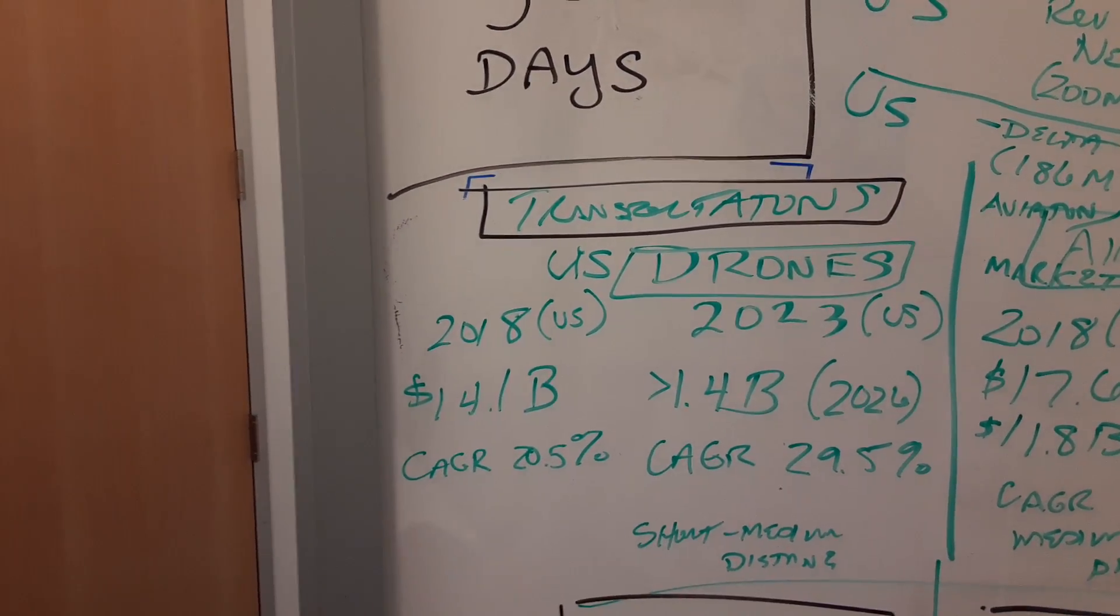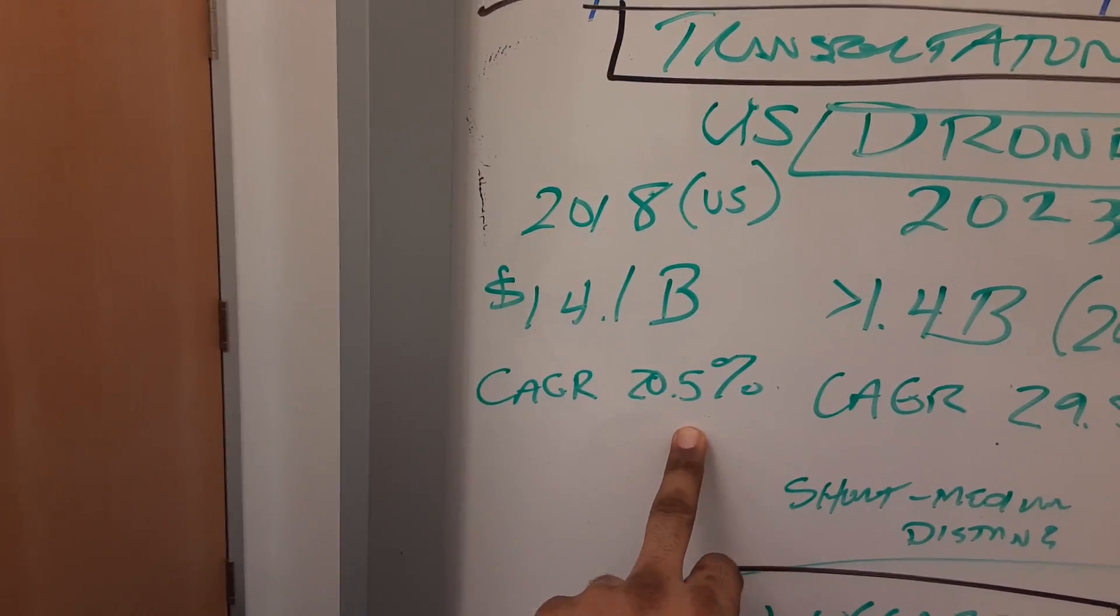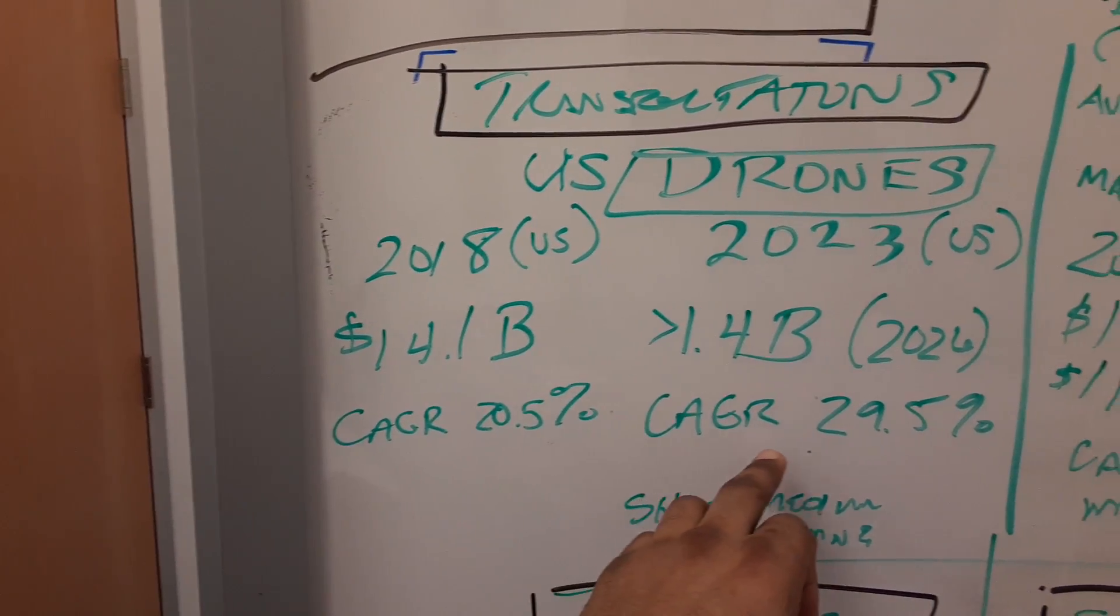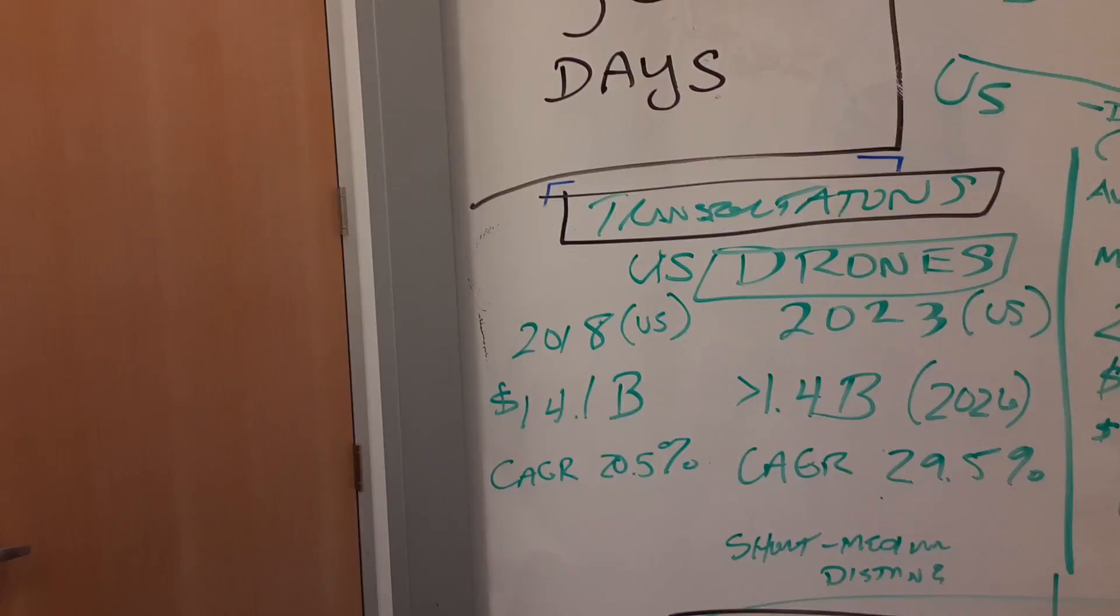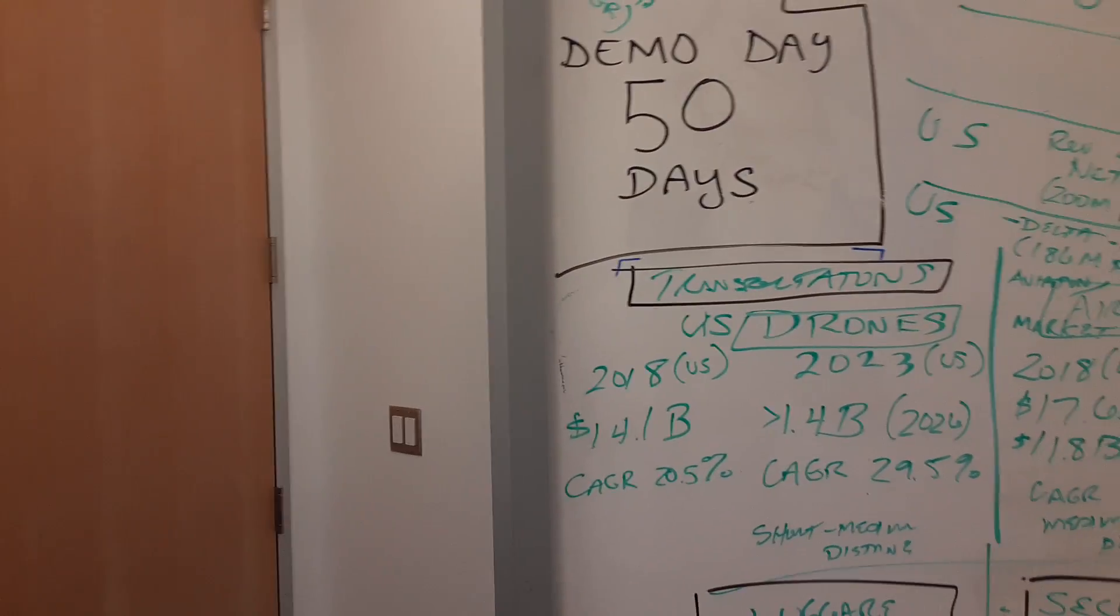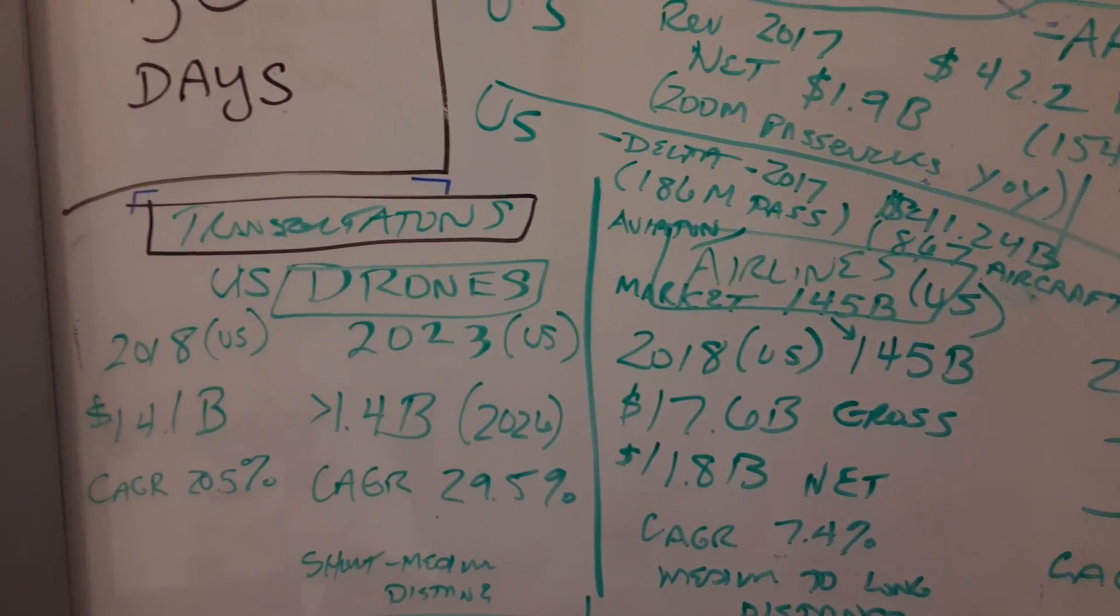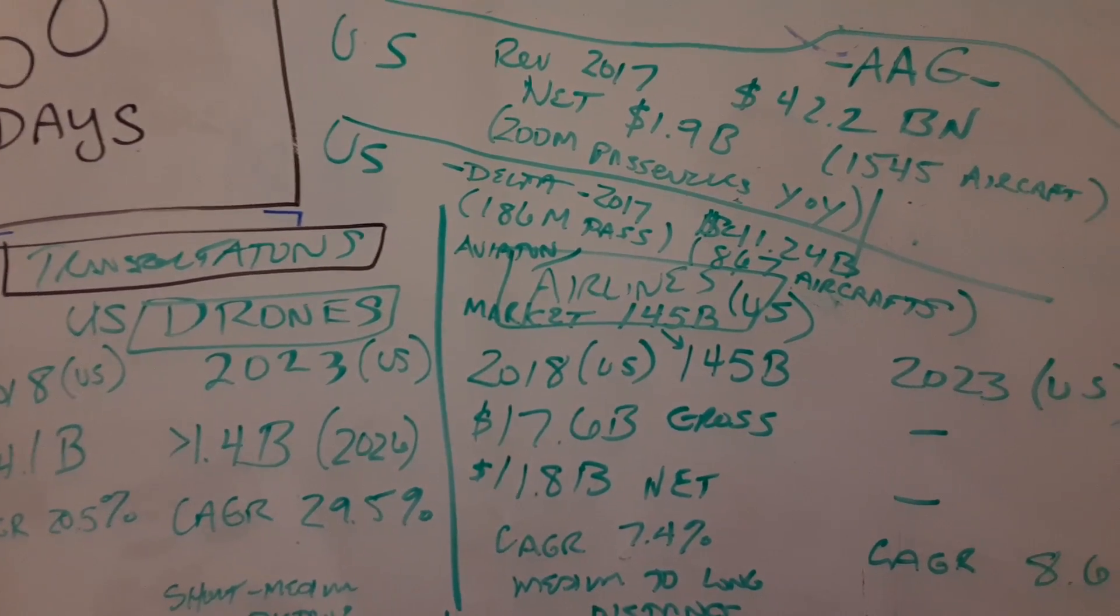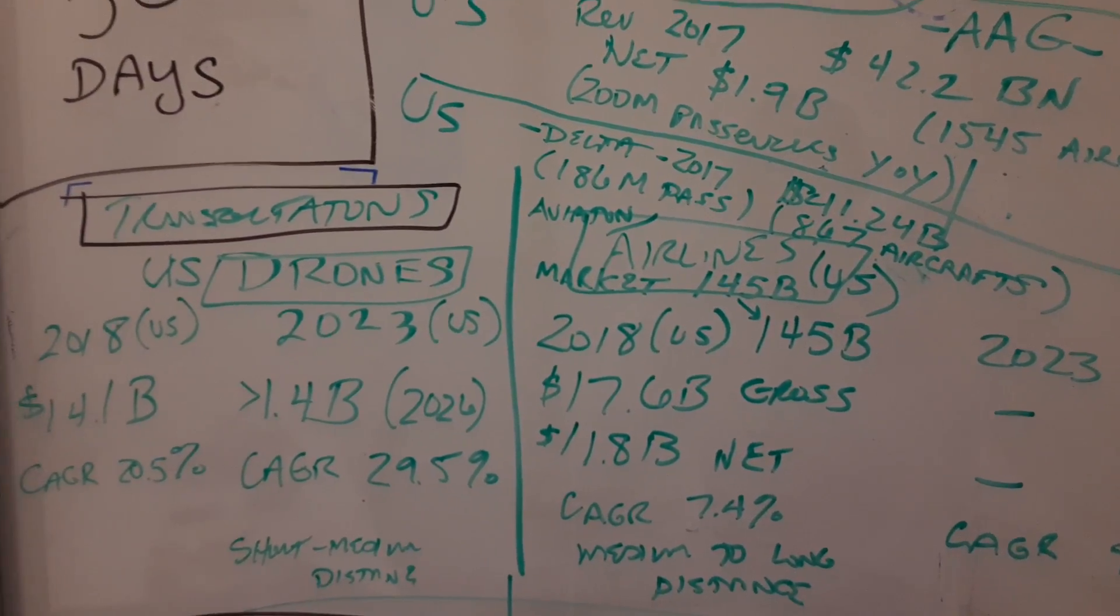Looking at the drone market, 2018 it's a 14.1 billion dollar market with a 20.5% compound annual growth rate. By 2023 it's looking to be 29.5 billion. I think it'll be a lot bigger than that. Looking at the airlines, they make 145 billion in 2018. By 2023 we're looking at 207 billion, a 7.4% CAGR.